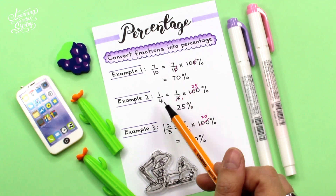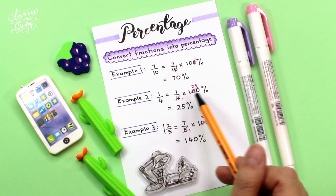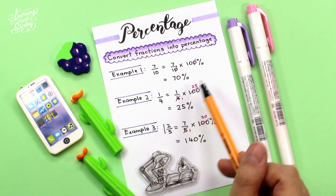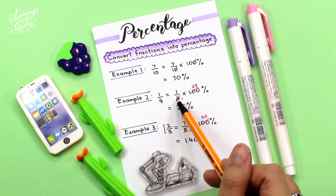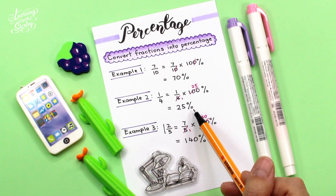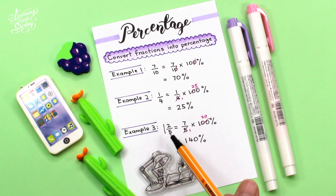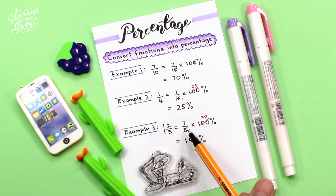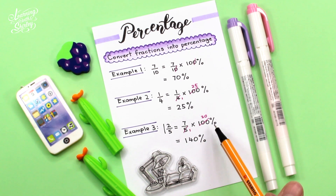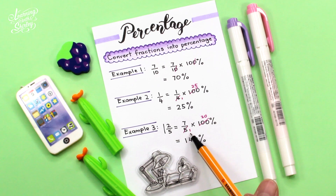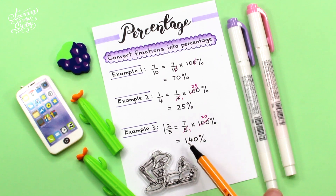Let's look at example two. Given 1 over 4. To convert this fraction to percentage, we multiply by 100%. We see what we can cancel: 100 divided by 4 is 25 and 4 divided by 4 is 1, so the answer is 25%. Let's look at example three. Given the mixed number 1 and 2 over 5, we first change it into an improper fraction, then multiply by 100%. We cancel: 100 divided by 5 gives 20, so 7 times 20 is 140. Therefore the answer is 140%.